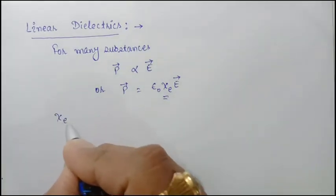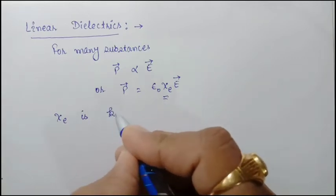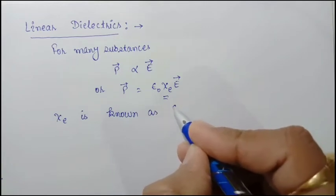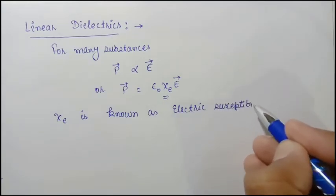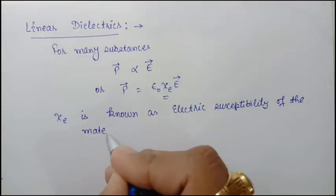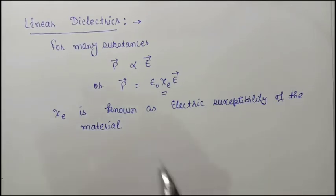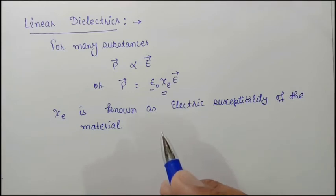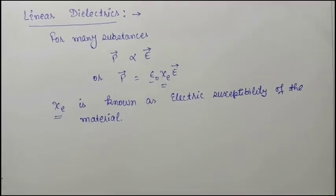Here χₑ is the constant of proportionality and is known as the electric susceptibility of the material. ε₀ is introduced in this equation to make χₑ a dimensionless quantity.